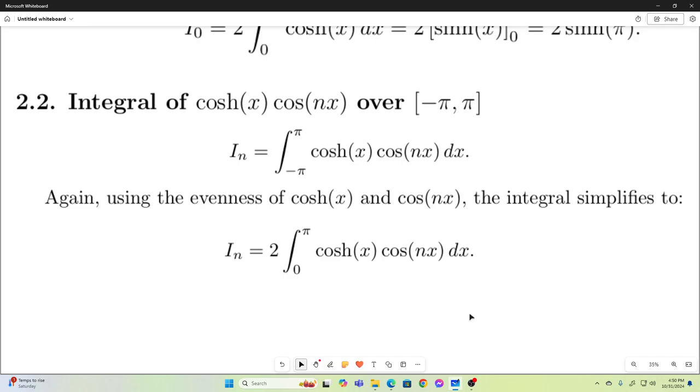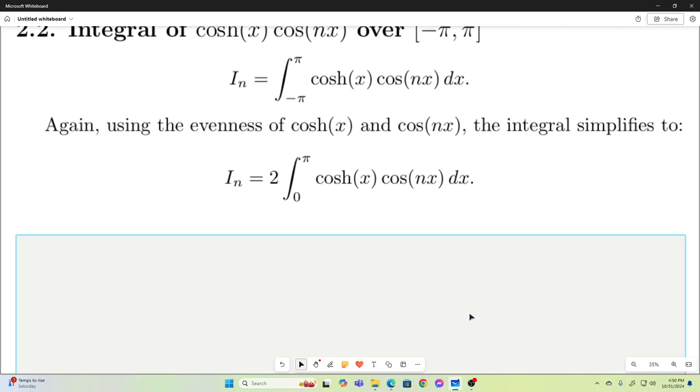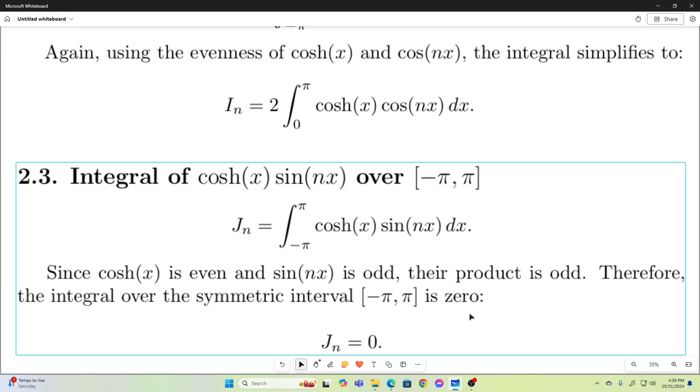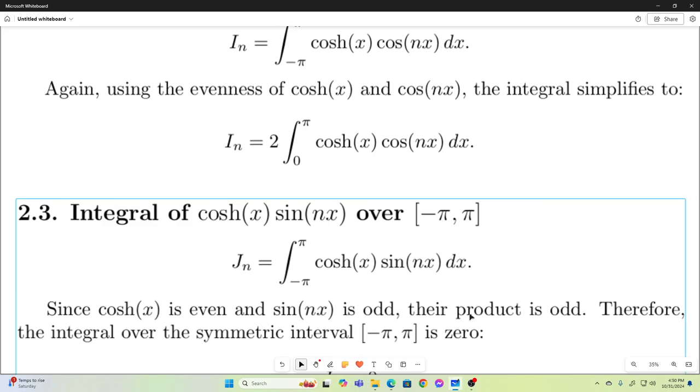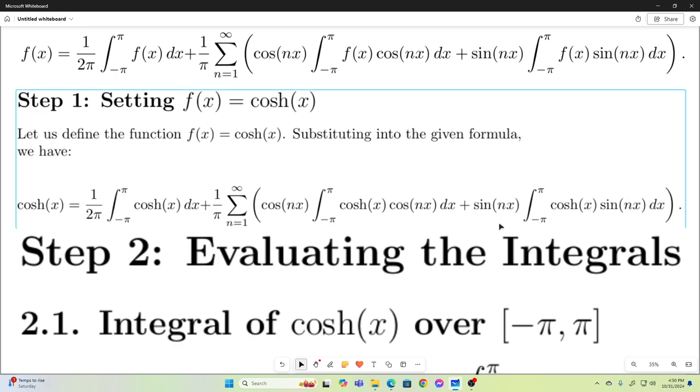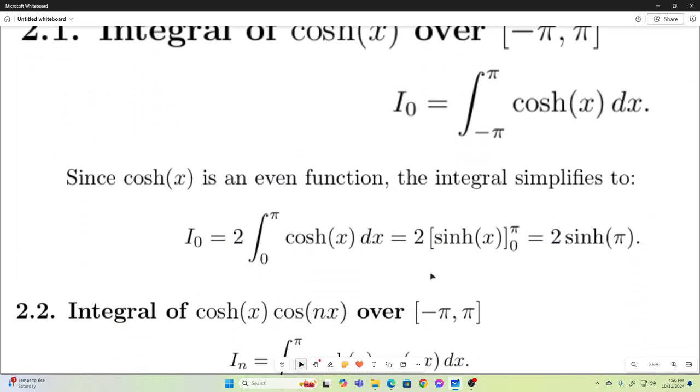This integral negative pi to pi of hyperbolic cosine x times cosine nx dx, we'll label that I sub n. Again, we'll use the evenness of the hyperbolic cosine and cosine nx to just double the integral over the positive interval. Since hyperbolic cosine is even and sine nx is odd, their product is odd. Therefore, this is an integral, an odd integral over a symmetric interval and is therefore equal to zero.